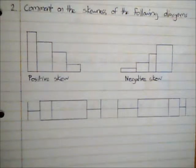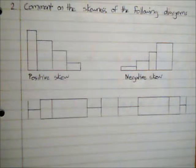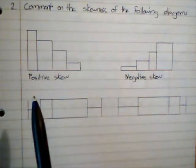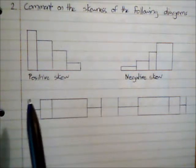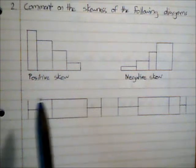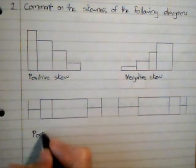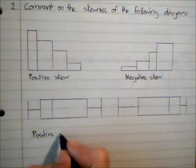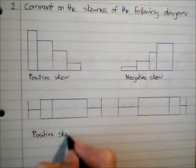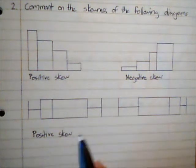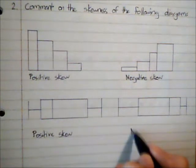And we can also comment on these two box plots. So much the same kind of idea as here with the histograms. So we can say that this first one is positively skewed. And this second one here is negatively skewed.